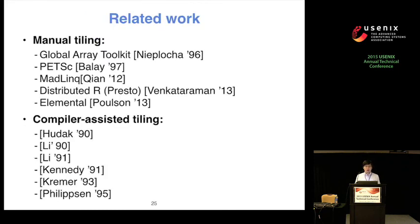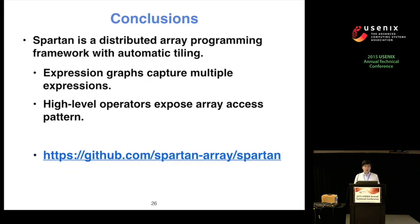There is a lot of related work in this area. Many distributed array libraries and frameworks have been proposed, but they usually require users to do manual tilings for good performance. The HPC community has also proposed compiler techniques to analyze programs and derive good partitions for arrays, but compiler techniques cannot always precisely analyze arbitrary programs and are not easy to use across different languages. In this talk, I presented Spartan, a distributed array framework with automatic tiling. Spartan's high-level operators explicitly expose array access patterns with a fixed tiling cost profile, and combined with an expression graph, Spartan can achieve automatic tiling. Thank you.